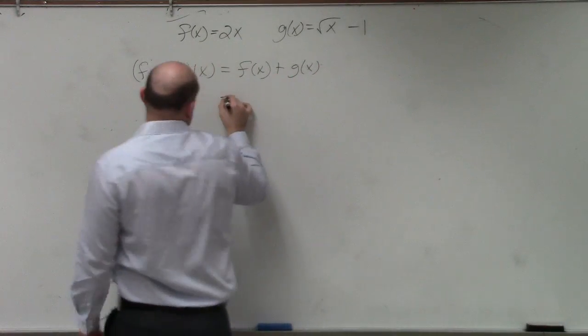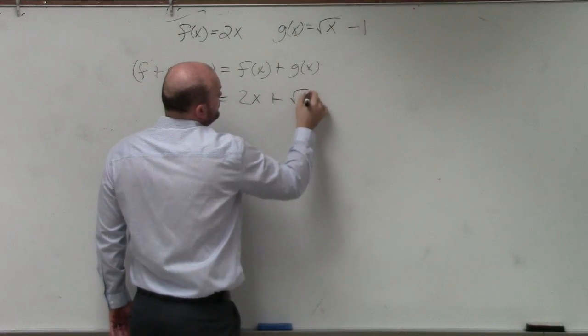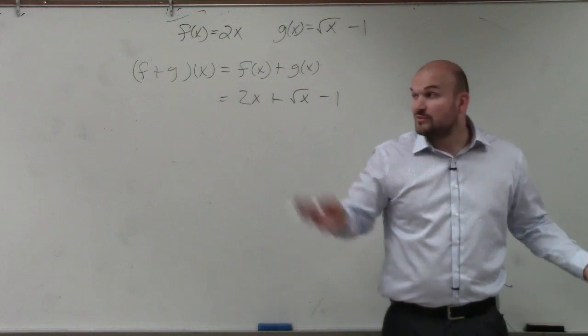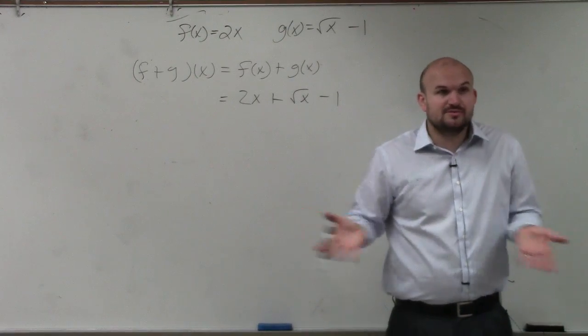Well, in this case, we know what f of x is, which is 2x, plus square root of x minus 1. Now, do we have any like terms? No. So it's like the other problem, right? There's no like terms. We can't do anything.